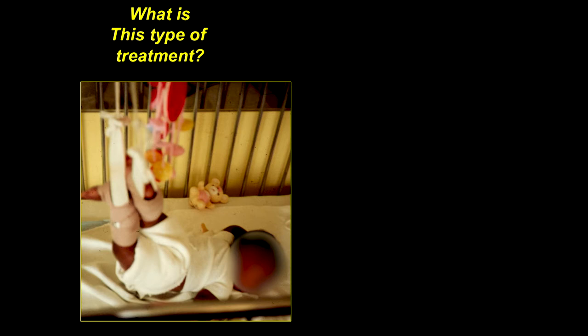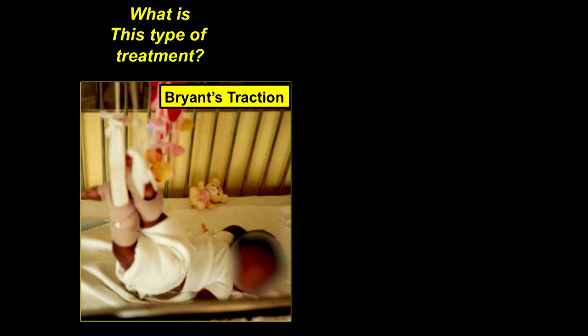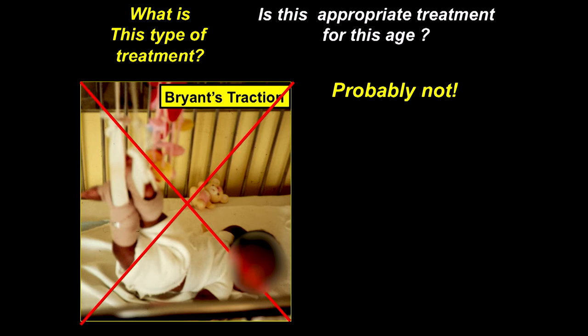What kind of treatment is this? This is Bryant's traction, and it's very effective. We used to say you could use Bryant's traction if they were no more than 30 pounds and less than a year old. But nowadays we don't use it anymore. There are a lot of reports in the recent literature of complications even when you go by the rules of 30 pounds. So why the complication rate? You get hyperextension, which causes vascular spasm, and you decrease blood flow because you have to put on a fairly tight ACE bandage to hold it.